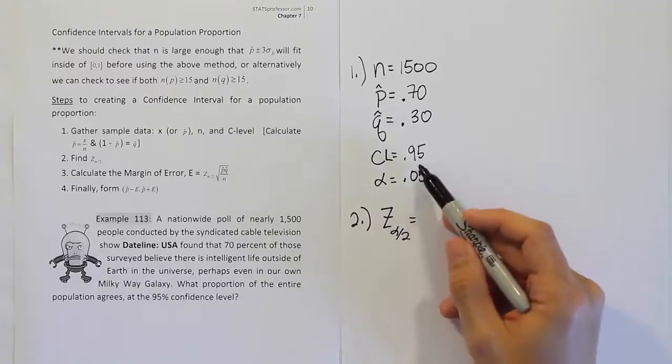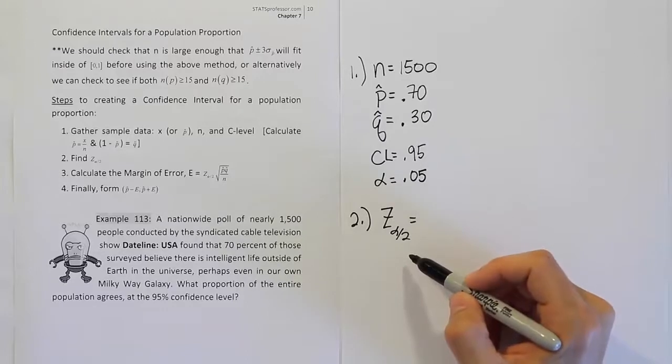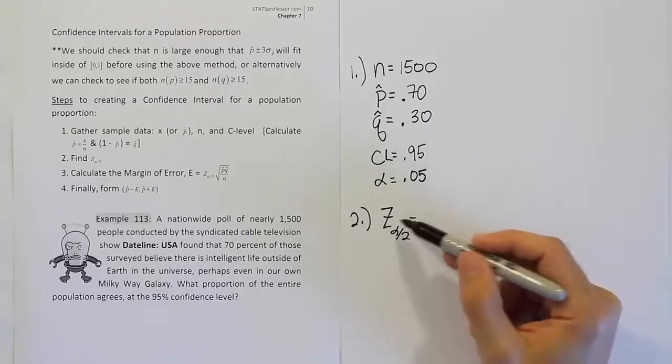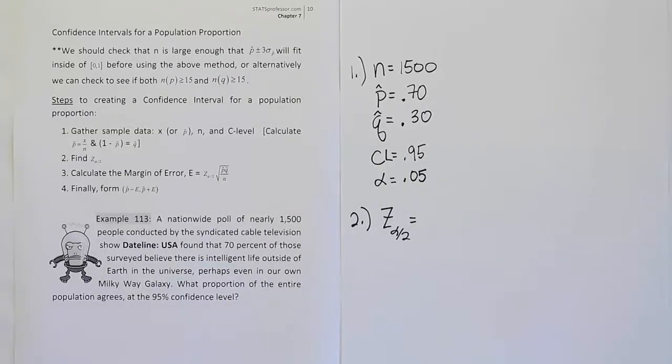Alright, so either way, with 95% confidence, z alpha divided by 2 is found by going to the t table, looking up half of alpha all the way down to the bottom where we keep the z values on the t table. So let's go ahead and do that now.